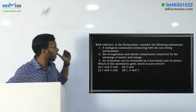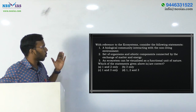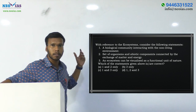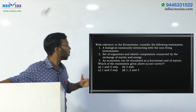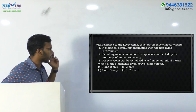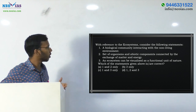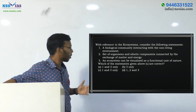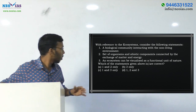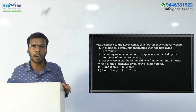This is an environment science model question from the topic ecosystem. The question asks: with reference to ecosystems, consider the following statements. Statement A: a biological community interacting with the non-living environment. Statement B: a set of organisms and abiotic components connected by the exchange of matter and energy. Statement C: an ecosystem can be visualized as a functional unit of nature. Which of the statements given above is or are correct?